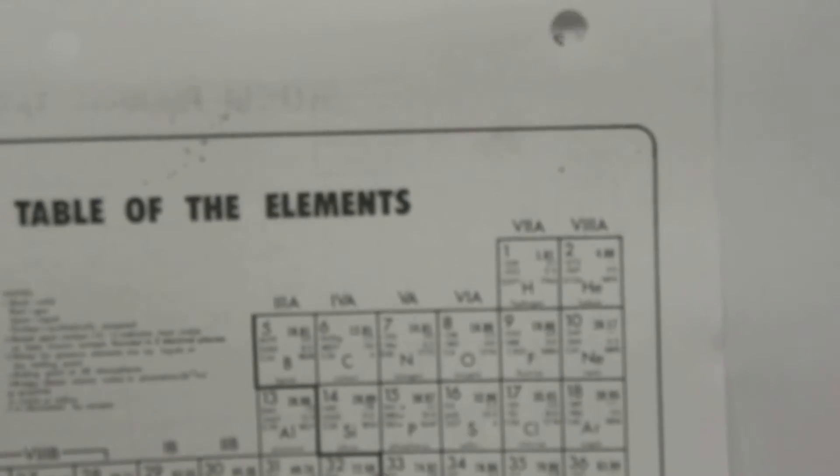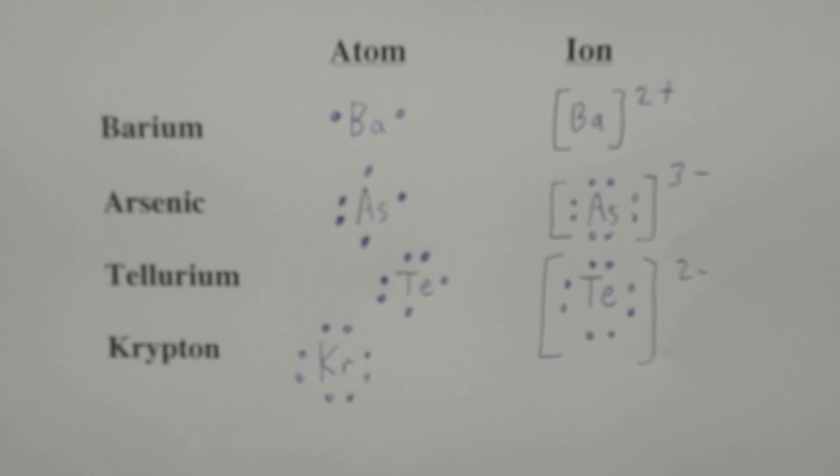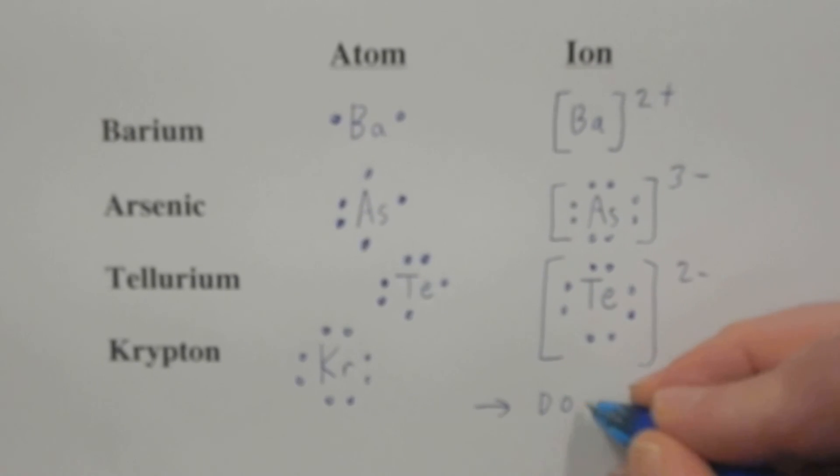Well, Krypton we know is a noble gas. Group 8. So we put in our eight dots, like so. And then we remind ourself, it does not form ions. It's happy the way it is. It does not need to change.